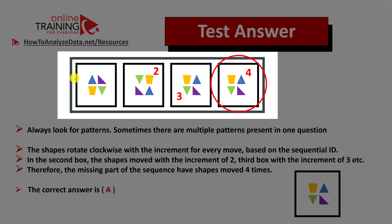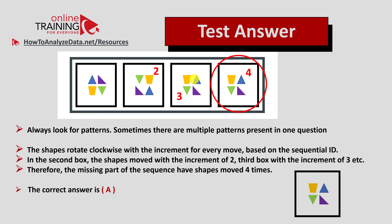As usual, always look for patterns. In this particular case there is only one pattern: the shapes rotate clockwise with an increment on every move. For example, following the yellow shape from box one to box two, it moves from the 8 o'clock position to the 2 o'clock position — an increment of two. The next increment would be three, determining the next position of the yellow shape in square three. Following this pattern logically, the move in shape four would be an increment of four, bringing it back to the same position. The answer is easy once you know the pattern.